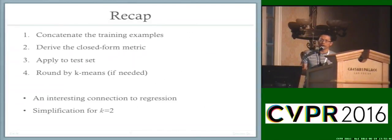Just to recap the whole procedure: First, we concatenate all training examples into one super training example. Then we derive in closed-form the Mahalanobis metric. Then we apply this metric to the test set, and if needed, you can also run k-means to refine the solution. In our paper, we also showed this approach has a very interesting connection to regression problems, which is surprising. In this respect, it's not that surprising because we have supervision, so one way or another you're bound to do some regression. Also, if we have only two clusters, we have a simplified result. For more details, please come to the poster.